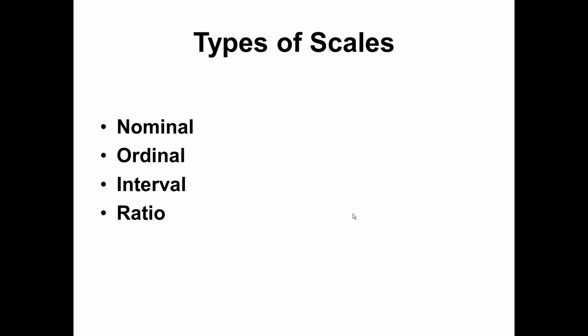According to psychologist Stanley Smith Stevens, there are four types of scales of measurement: nominal, ordinal, interval, and ratio.